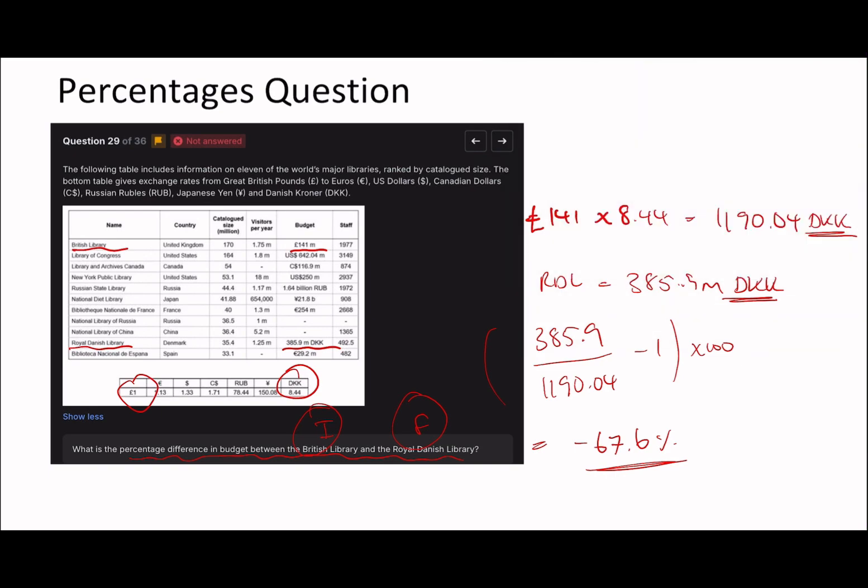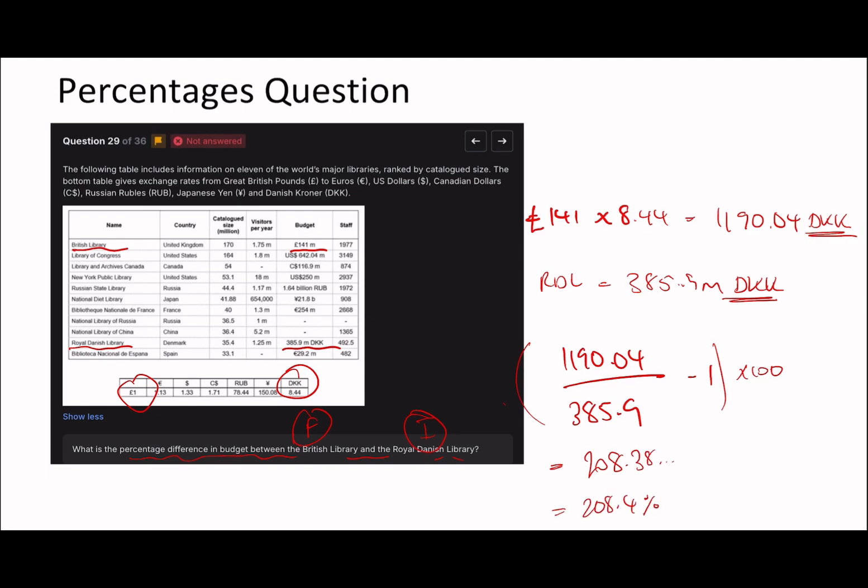So we will do the answers both ways. Let's do it the way I first did it, with this is the initial and this is the final. So 385.9 divided by 1190.04 minus 1 times 100, which gives us negative 67.6%. But if we were doing it the other way, considering this to be final and this to be initial, then the calculation becomes 1190.04 divided by 385.9 minus 1 times 100, which equals 208.4%.